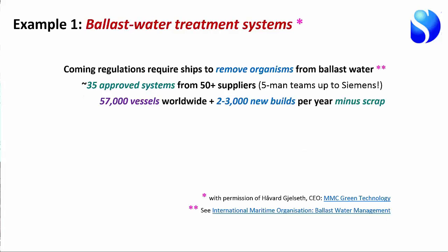So here's the problem. This is a small division of a large marine engineering business—a Norwegian business that does big-scale marine engineering equipment. There are something like 35 different systems for doing this from more than 50 suppliers. That will not go on—these suppliers will go out of business. There are 57,000 vessels worldwide and 2,000 new ships every year minus the scrap.